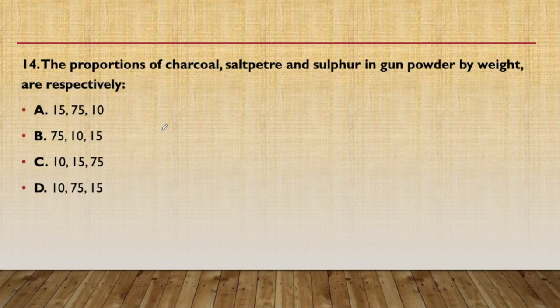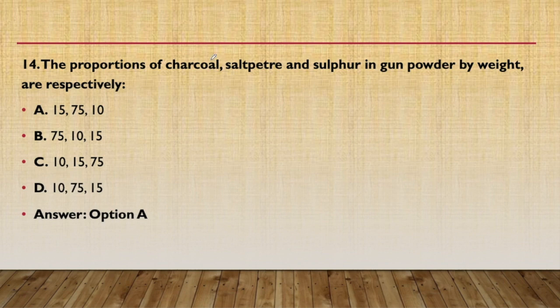Fourteenth question: the proportion of charcoal, saltpeter, and sulfur in gunpowder by weight are 15, 75, and 10 respectively. In gunpowder: 15 is charcoal, 75 is saltpeter, and 10 is sulfur.